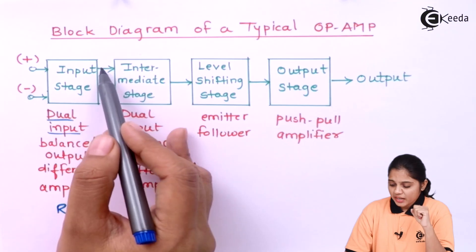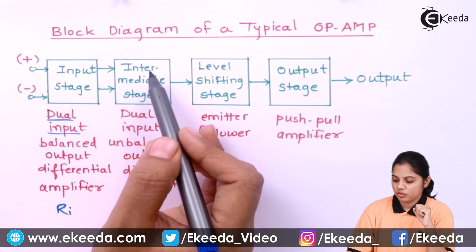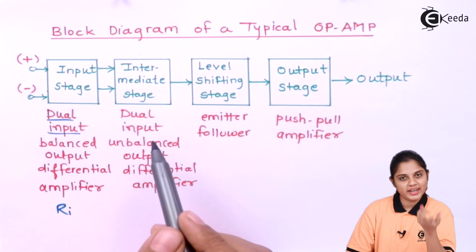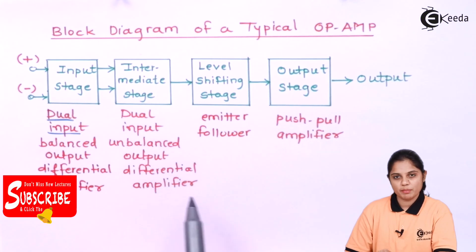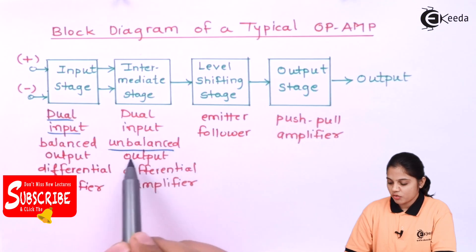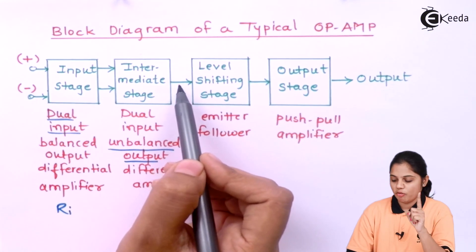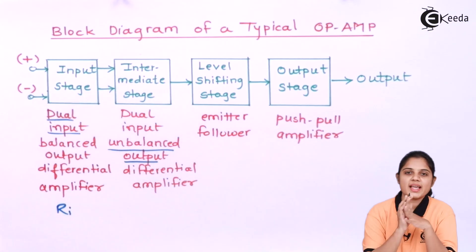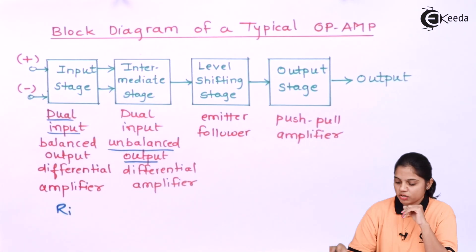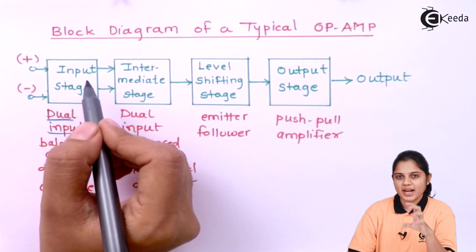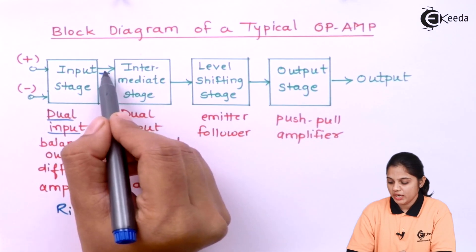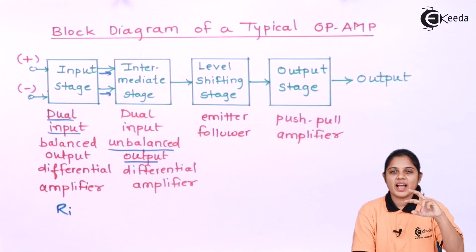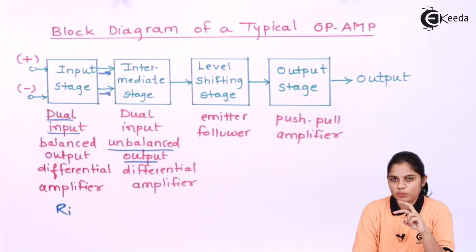This output is then provided to the intermediate stage, which is also a differential amplifier — a dual input unbalanced output differential amplifier. It has a single output and dual input. It acts as a differential amplifier because the output of the input stage is directly coupled to the intermediate stage as its two inputs, so it calculates the difference between the two inputs, amplifies it, and provides the result to the level shifting stage.